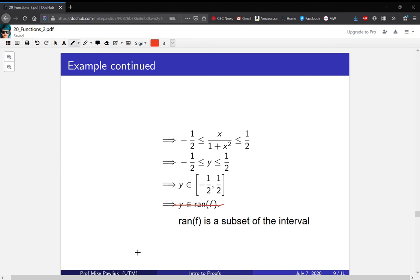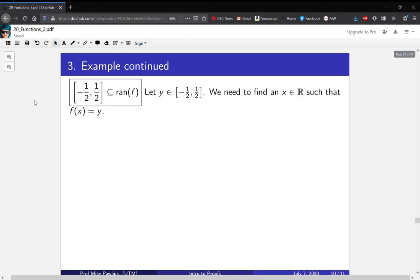All right, and now we're going to go the other direction. So let's show that the interval is a subset of the range. Let y be in the interval. It's our job to find an x in the reals such that f(x) = y. If y = 0, then we can let x = 0, and note that f(0) = 0 just by plugging it in, and that will be the y that we picked. This is sort of the easy case, nothing really is happening.